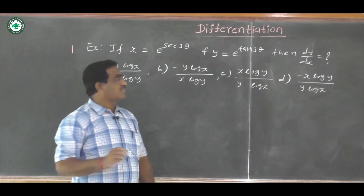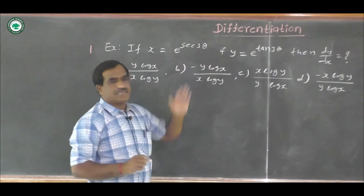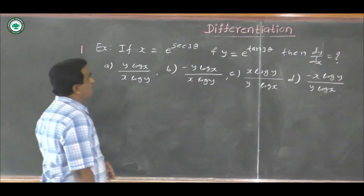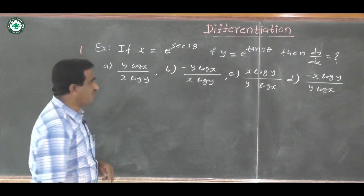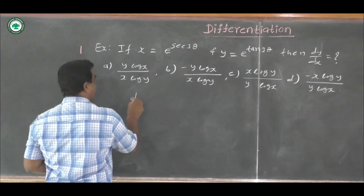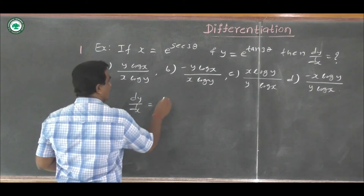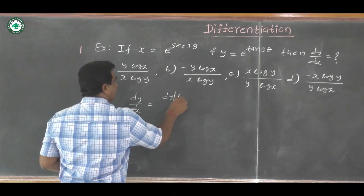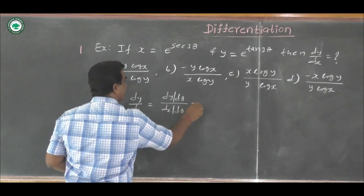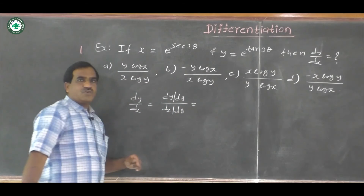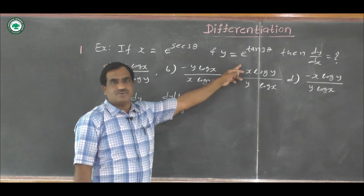We have to find the correct answer. Here we have parametric functions x and y. We have to use the parametric rule: dy by dx equals (dy by d theta) upon (dx by d theta). We have to find derivatives of these two equations with respect to theta.